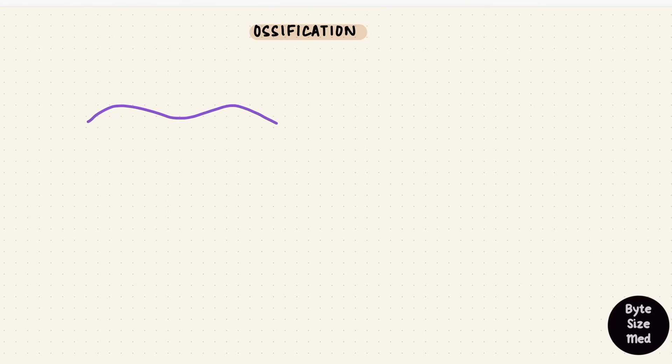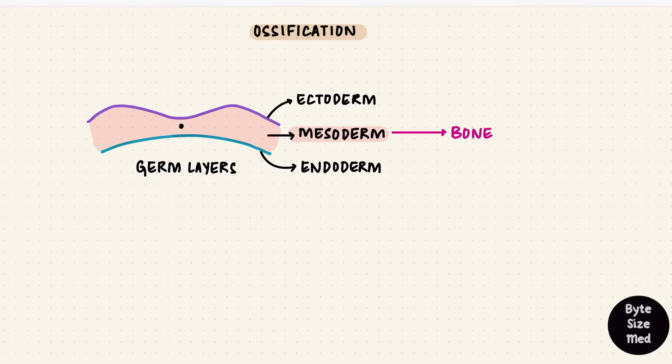There are three germ layers in an embryo and they go on to develop all the organs in the body. The ectoderm, the mesoderm, and the endoderm. Bones form from the mesoderm. That mesoderm forms the mesenchyme and the mesenchymal stem cells can differentiate into different kinds of cells.